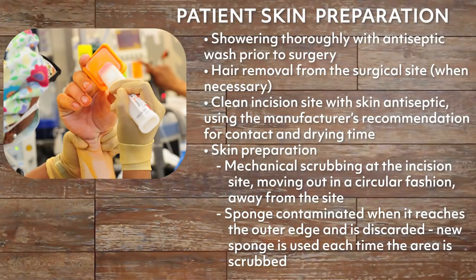Patient skin preparation involves the patient showering thoroughly with an antiseptic wash prior to surgery. The intraoperative circulating nurse will be involved in hair removal from the surgical site when necessary and cleaning the incision site with skin antiseptic using the manufacturer's recommendation for contact and drying time. Skin preparation begins with mechanical scrubbing at the incision site, moving out in a circular fashion away from the site. The sponge is considered contaminated when it reaches the outer edge and is then discarded, and a new sponge is used each time the area is scrubbed.